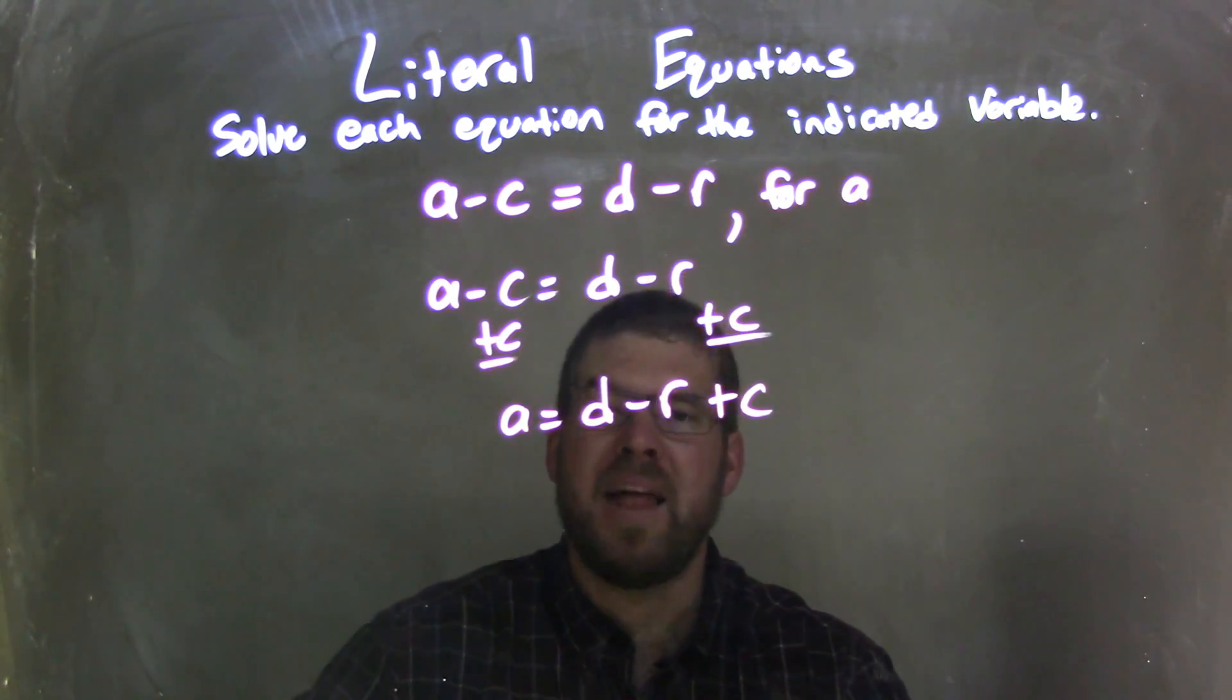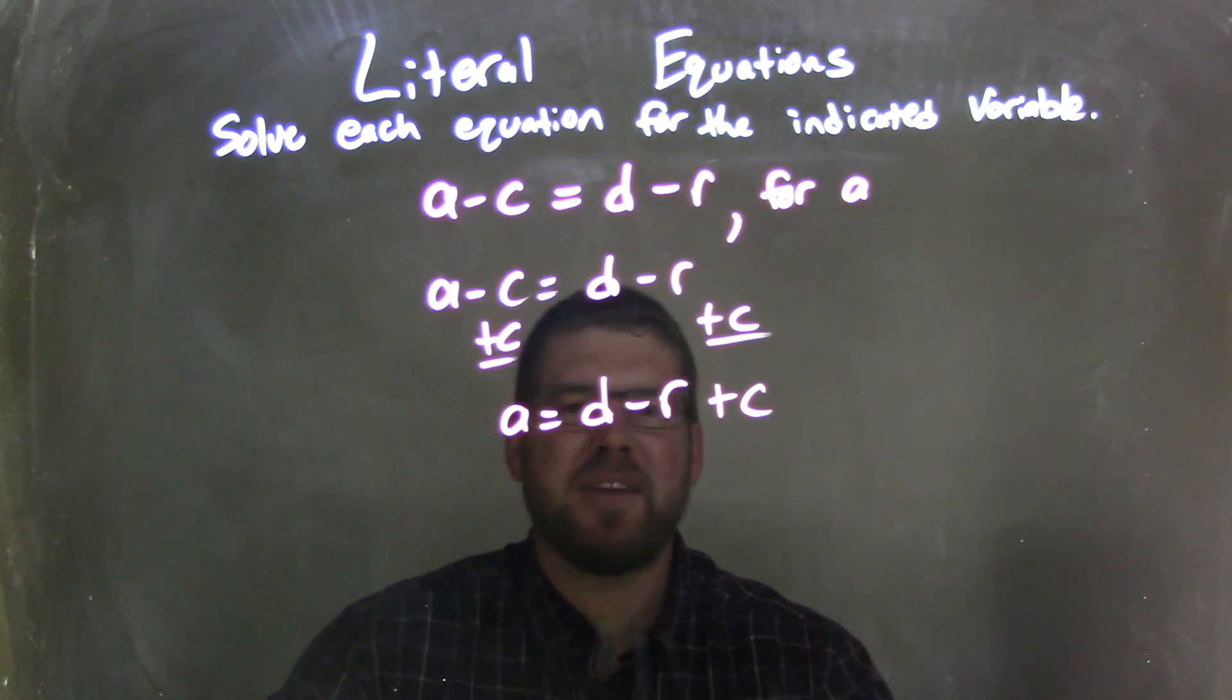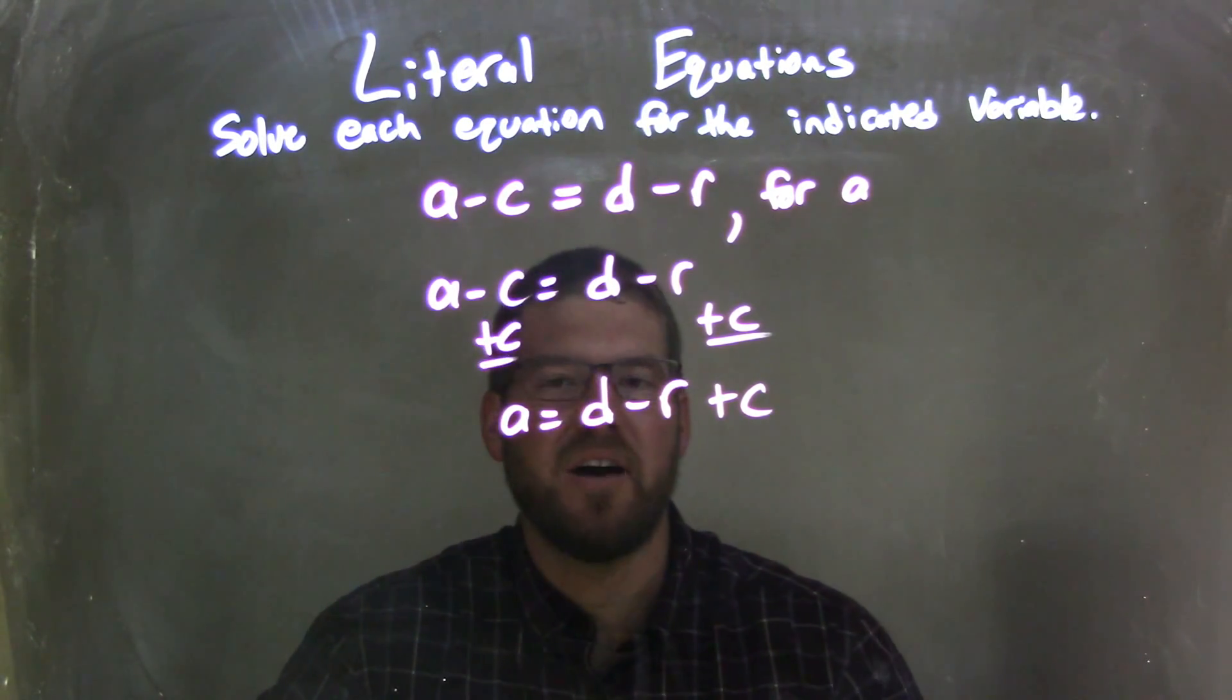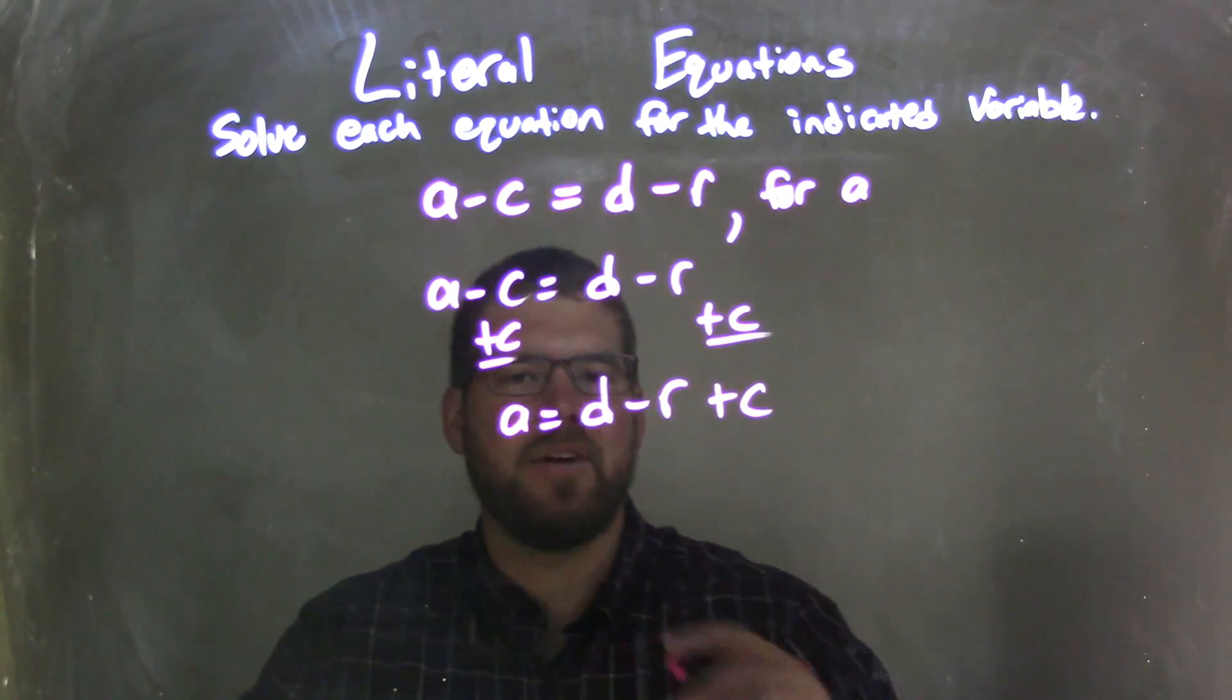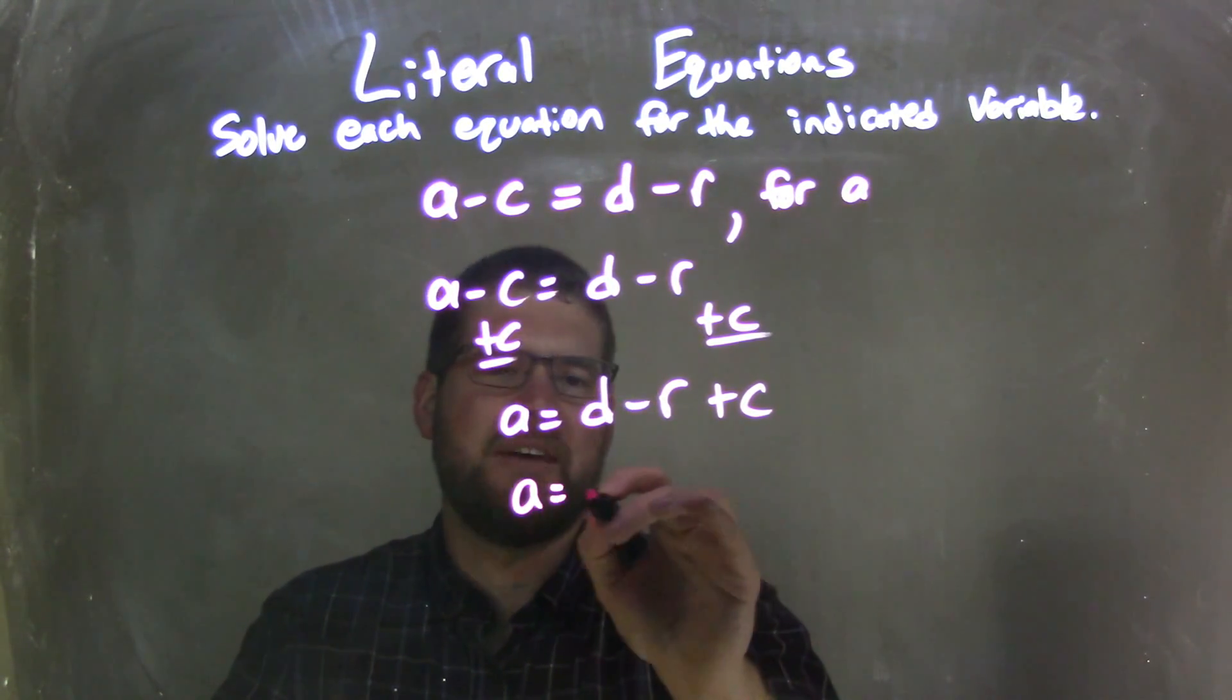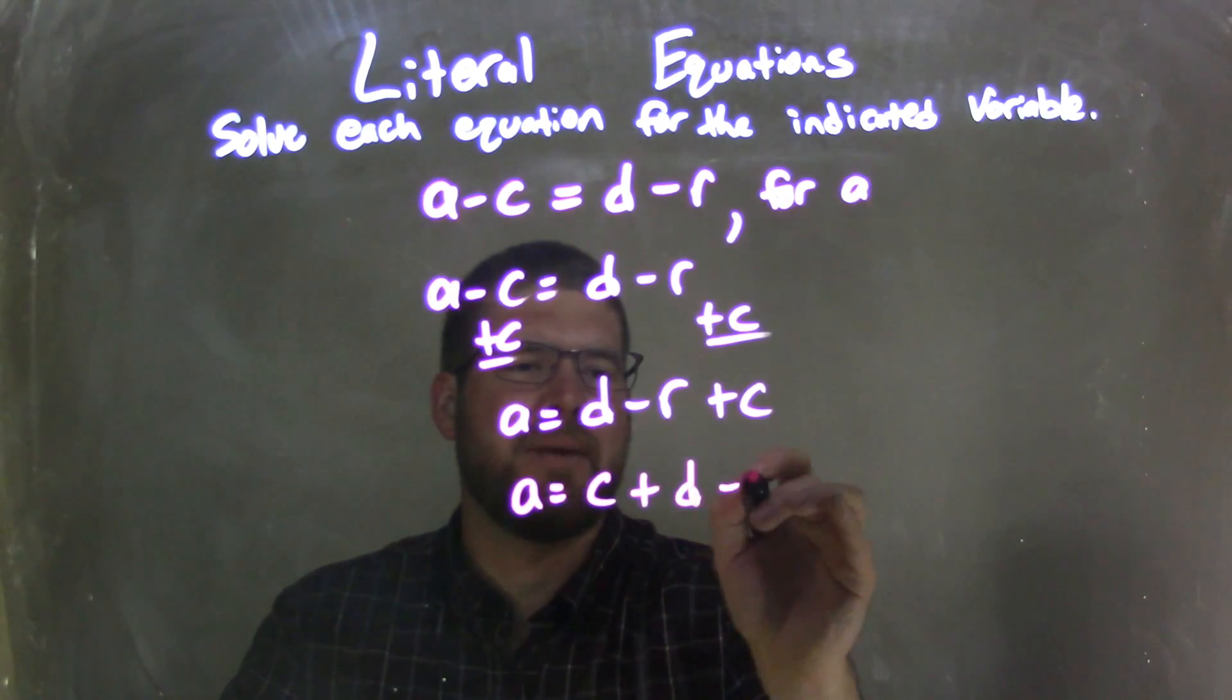Okay, and that's basically it. We're done. A is isolated. We have D minus R plus C. I think the worksheet I have here says we should rearrange and have C come first: C plus D minus R.